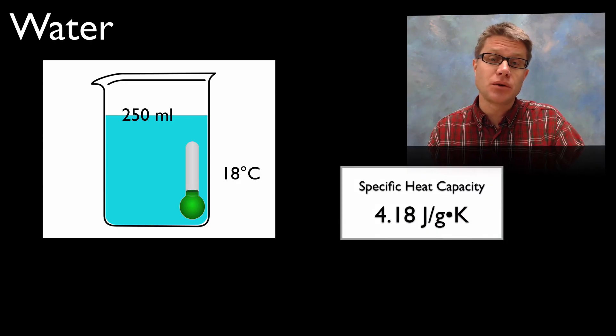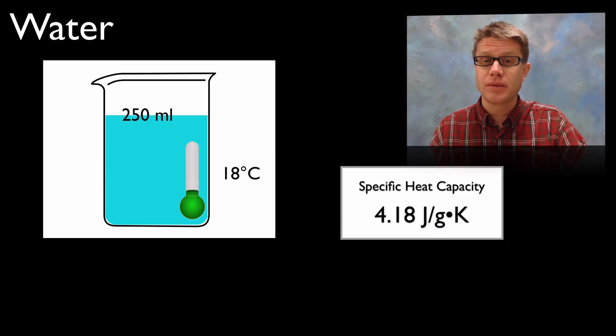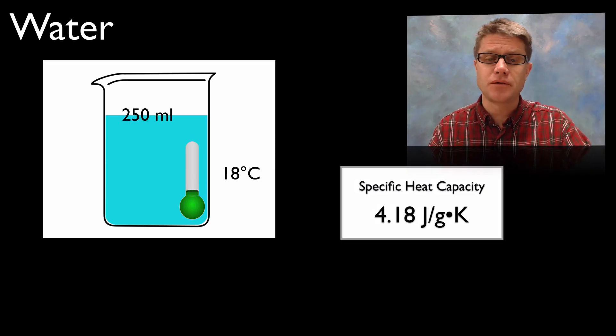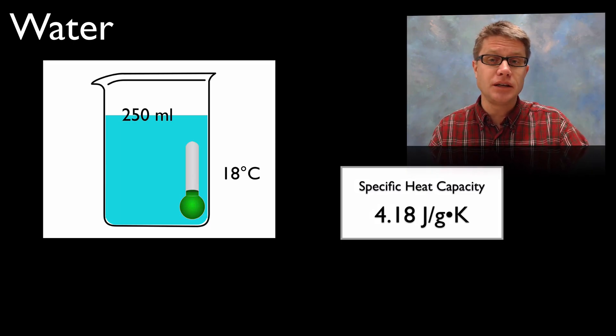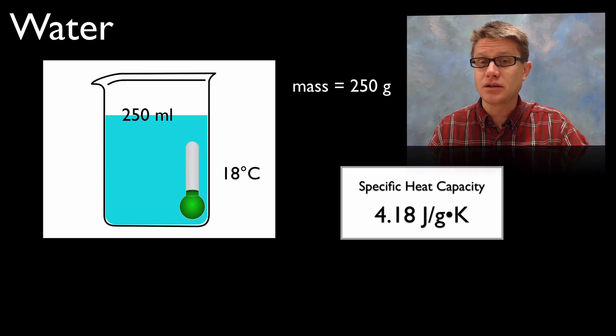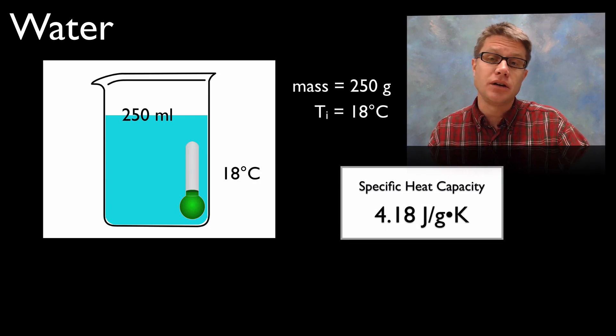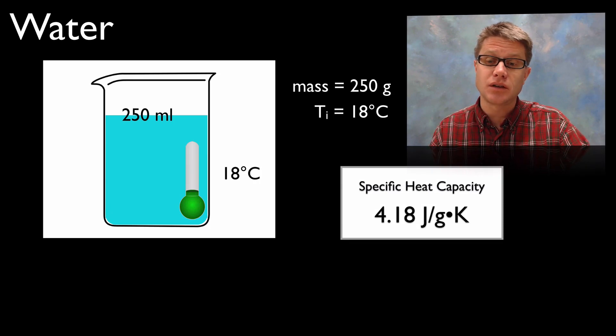And so imagine we have 250 milliliters of water. Now what's interesting about water is we know immediately that we have 250 grams of water. And we started at 18 degrees Celsius. And so our mass is 250 grams and our initial temperature is going to be 18 degrees Celsius.